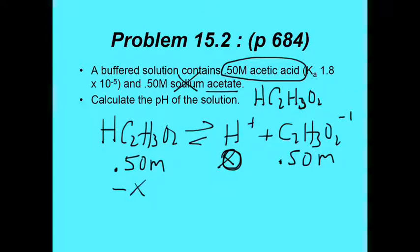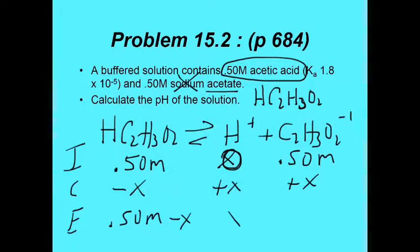Now this is going to go down by X, this is going to go up by X, and this is going to go up by X. So this is my initial, my change, and now I'm going to get my equilibrium. So I'm going to get 0.50 molarity minus X. This is going to be X, and this is 0.50 plus X. All right, so now we need to do the math, and we do have the Ka for this. If you check your notes, it says there it's 1.8 times 10 to the negative 5th. So let's go on and do that one.